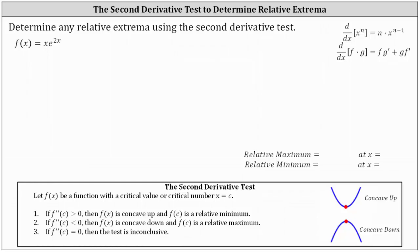This lesson will show how to use the second derivative test to determine any relative extrema of f of x equals x times e to the power of 2x. To use the second derivative test, we begin by determining the critical numbers of the given function, which is where the first derivative is equal to zero or undefined.